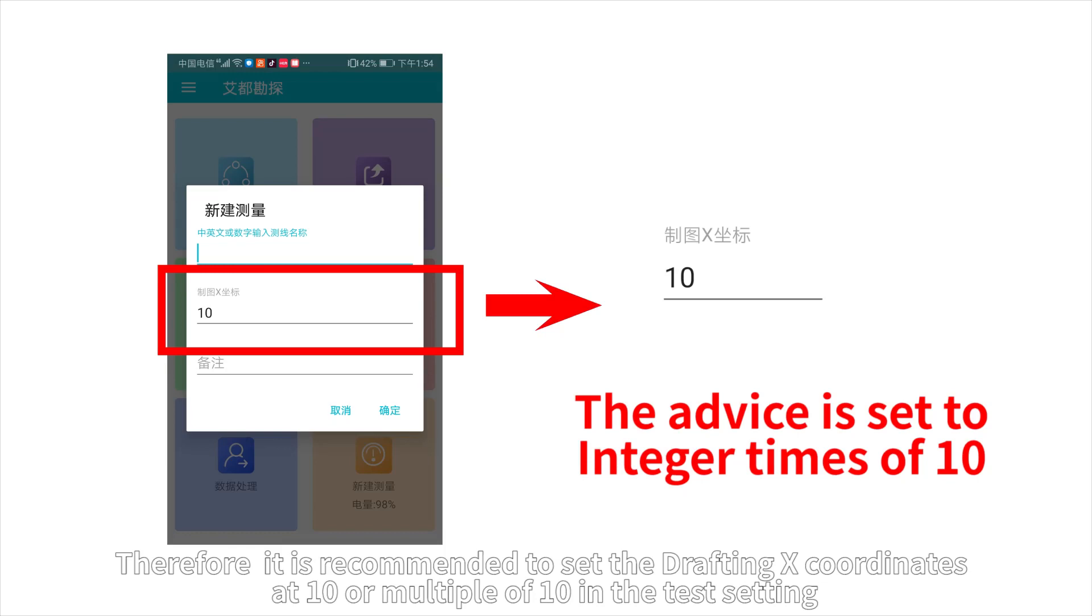Therefore, it is recommended to set the drafting x-coordinates at 10 or multiples of 10 in the test setting, so that the test result map can be easier to check and read.